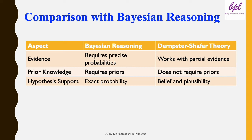Regarding prior knowledge: Bayesian reasoning depends heavily on prior probabilities. While powerful, this reliance on priors can be a limitation if no reliable prior knowledge is available or if the choice of priors is subjective. In contrast, DST does not require prior probabilities. Instead, it focuses entirely on the available evidence, letting us combine and analyze information without making assumptions about prior distributions. This makes DST a more flexible approach when prior knowledge is uncertain or unavailable.